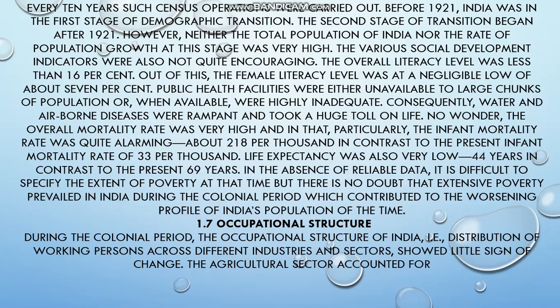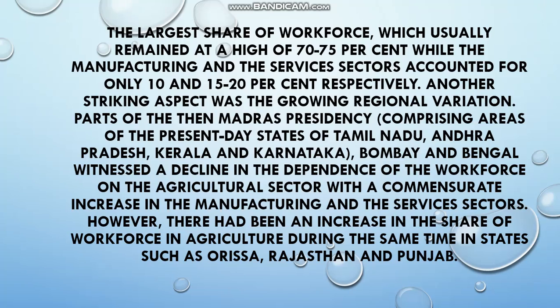The next structure is occupational structure. Occupational structure refers to the distribution of the working population across the primary, secondary, and tertiary sectors of the economy. We call the distribution of the working population across these three sectors the occupational structure.